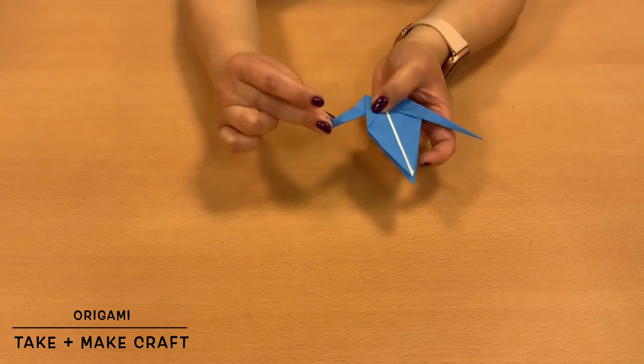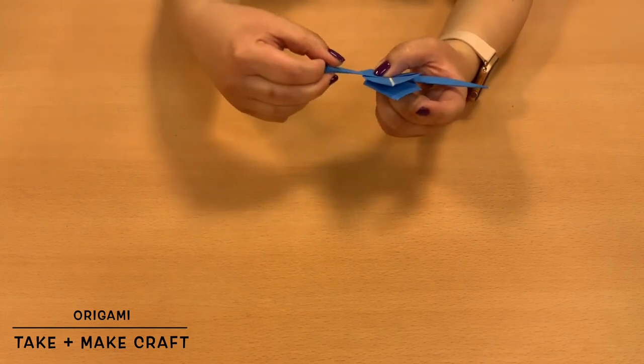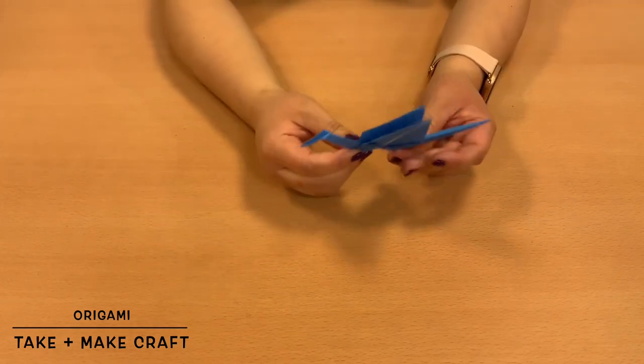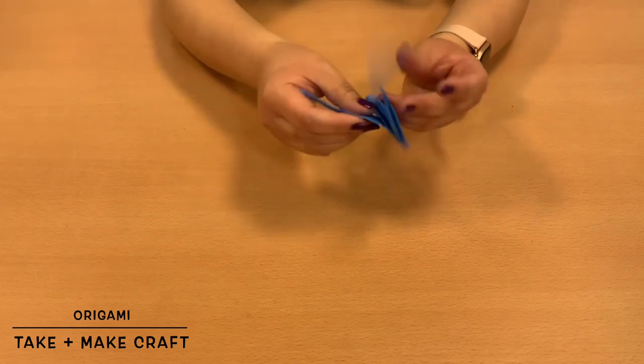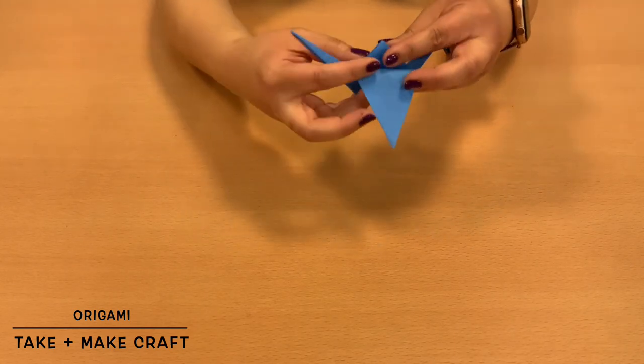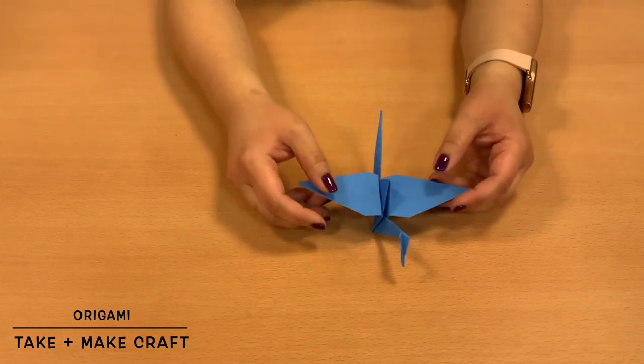And then, as you can see, these are the wings. You can keep the wings up if you'd like, but you can also fold them down as well, like so. And there you have a paper crane.